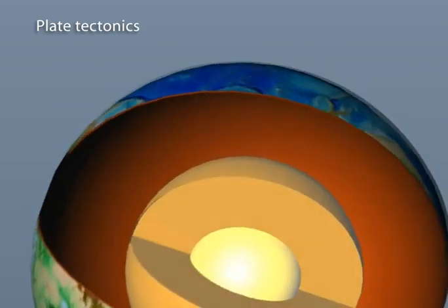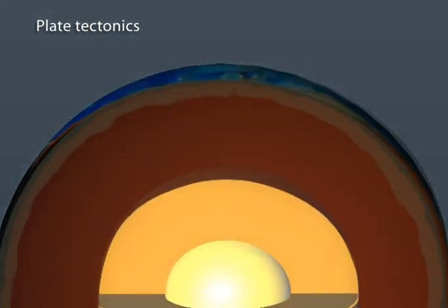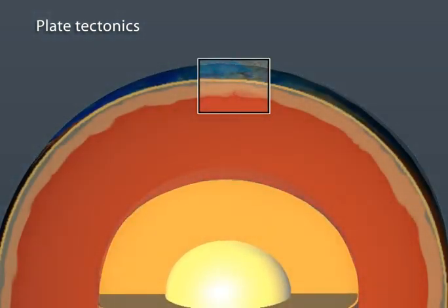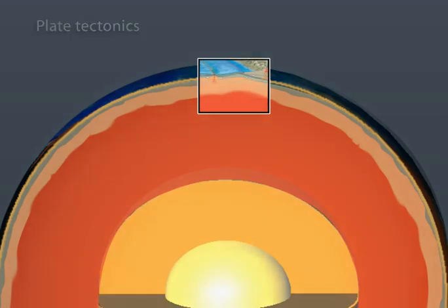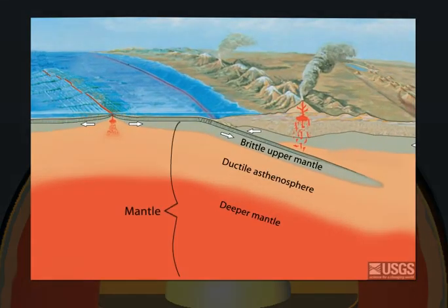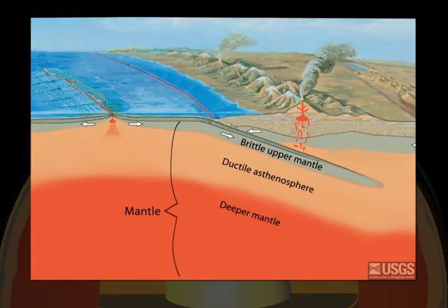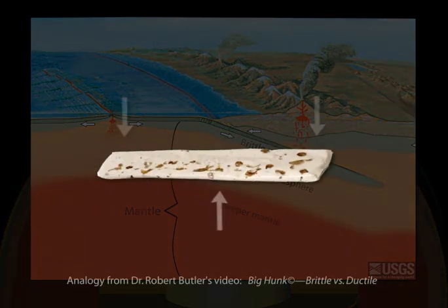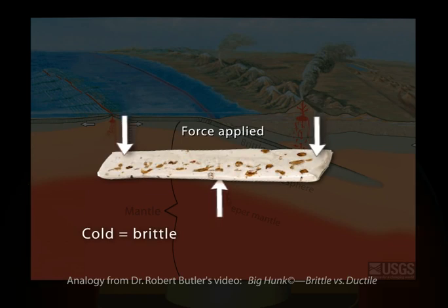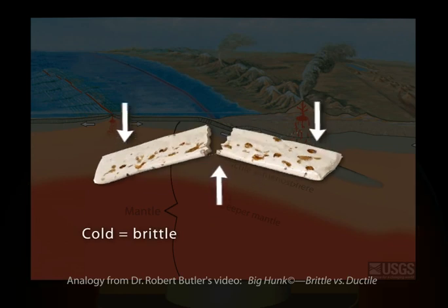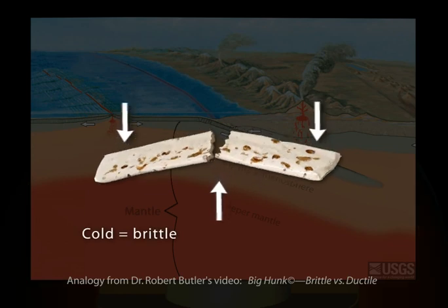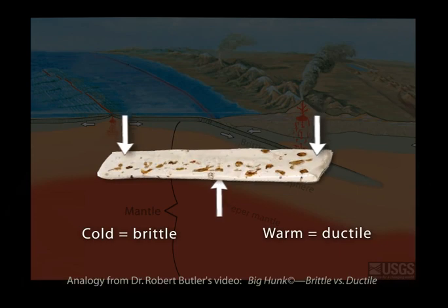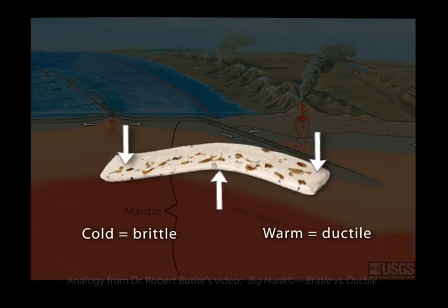But back to plate tectonics. As you recall, the cool uppermost part of the mantle is brittle. How can the top of the mantle be brittle when the same material in the asthenosphere is ductile? A big hunk candy bar can be used as an analogy. Like the uppermost cool mantle, when the big hunk is cold, it is brittle and breaks when bent. When you heat it up, it becomes ductile or plastic and can bend and flow.